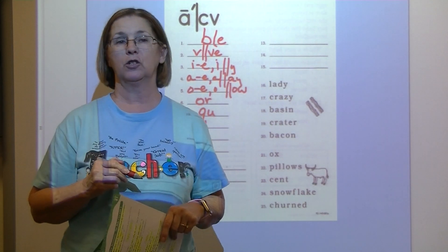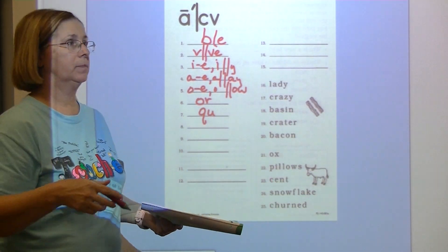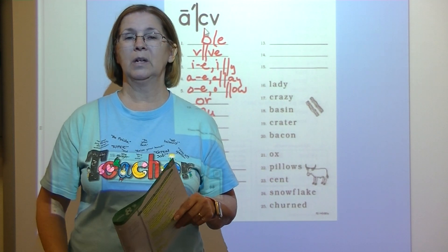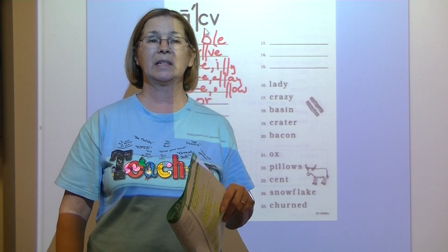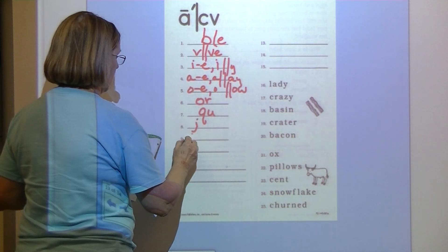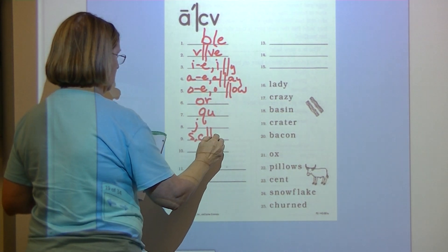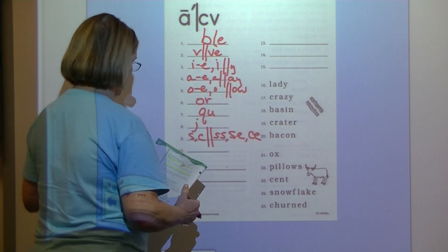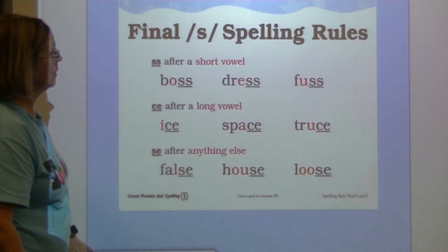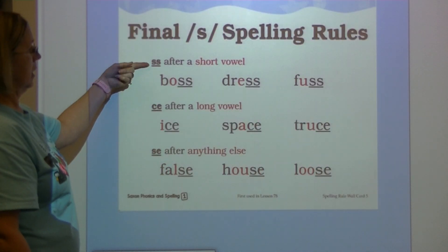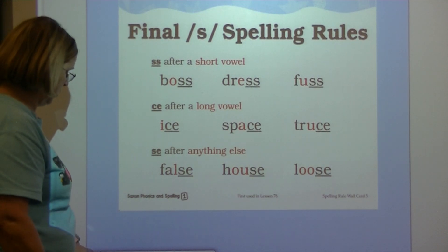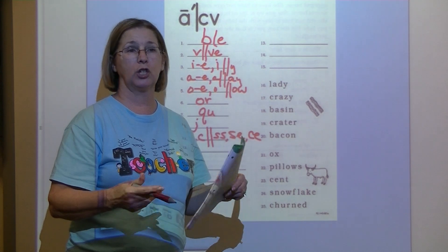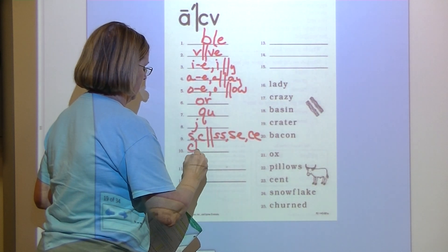Number eight — echo: J. What's the spelling response for J? J. Number nine — echo: S sound. What's the spelling response for S? S, comma, C, final SS, comma, SE, comma, CE. Remember: SS after a short vowel, CE after a long vowel, SE after anything else. Number ten — echo: CH. What says CH? Digraph CH.